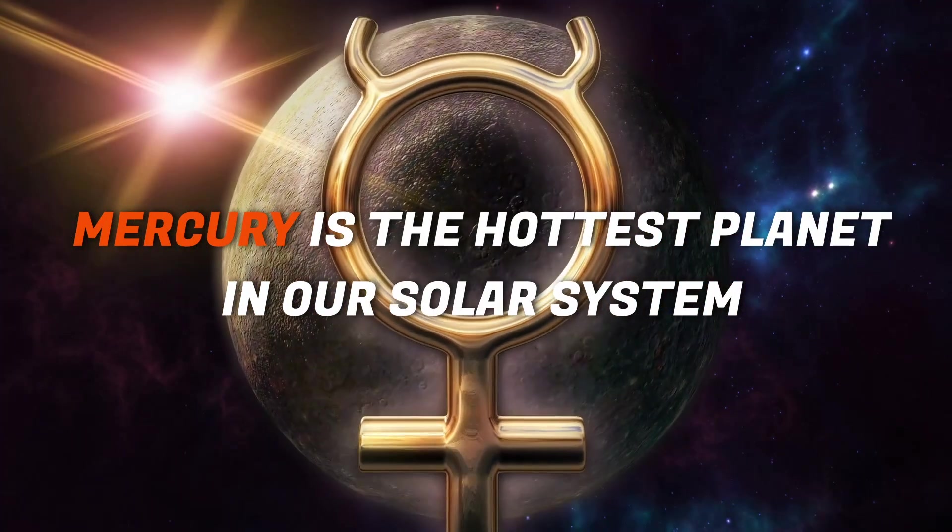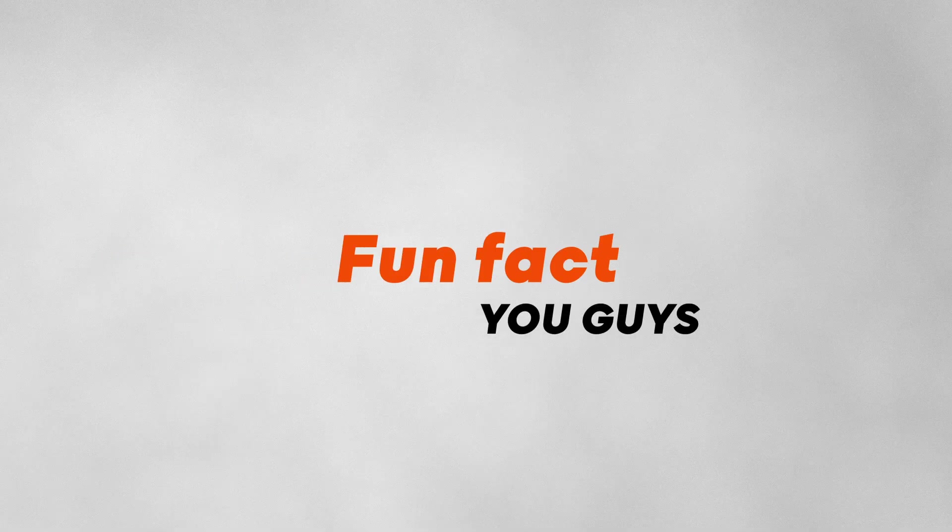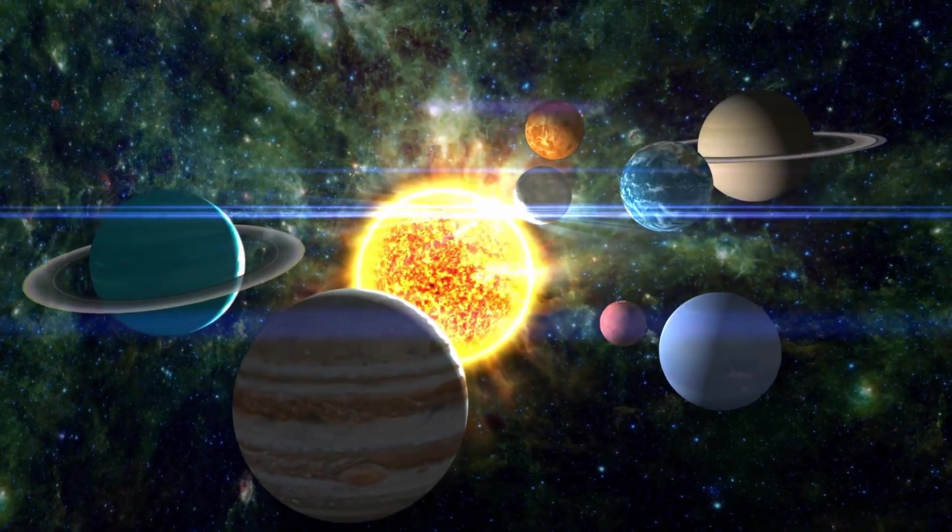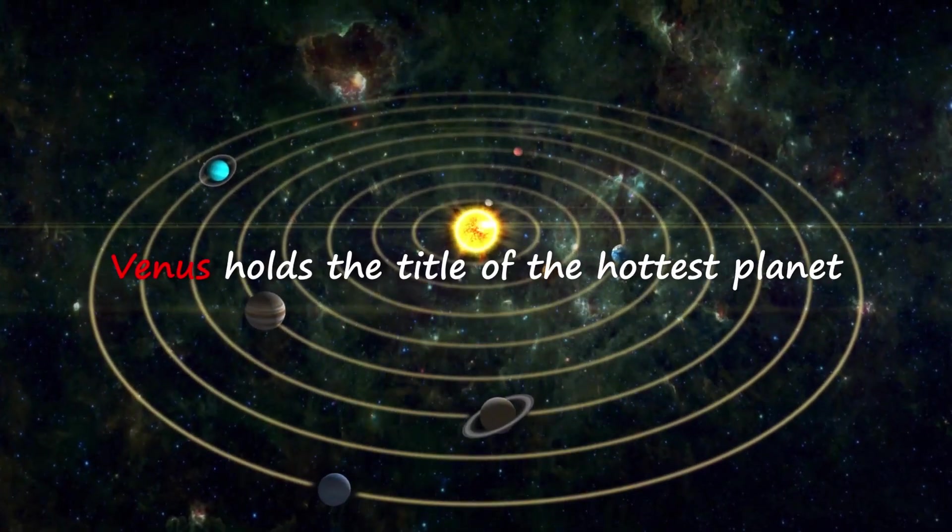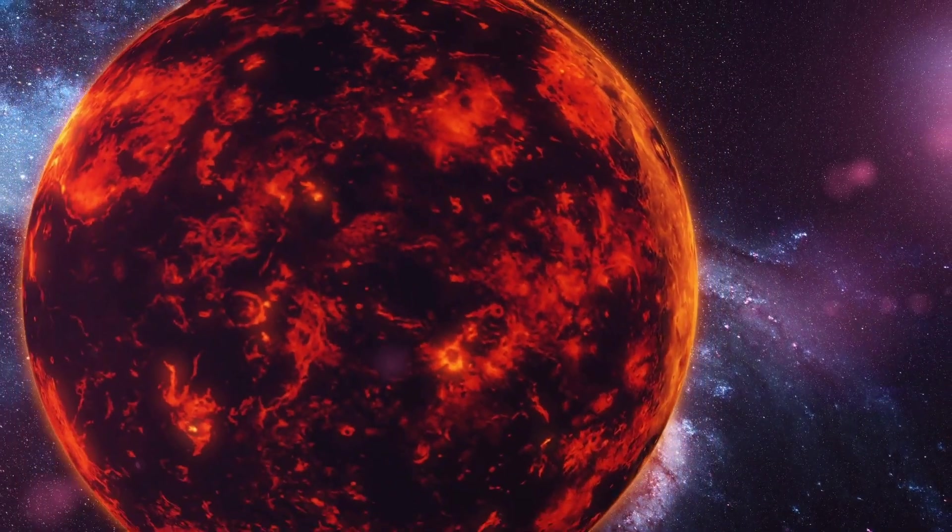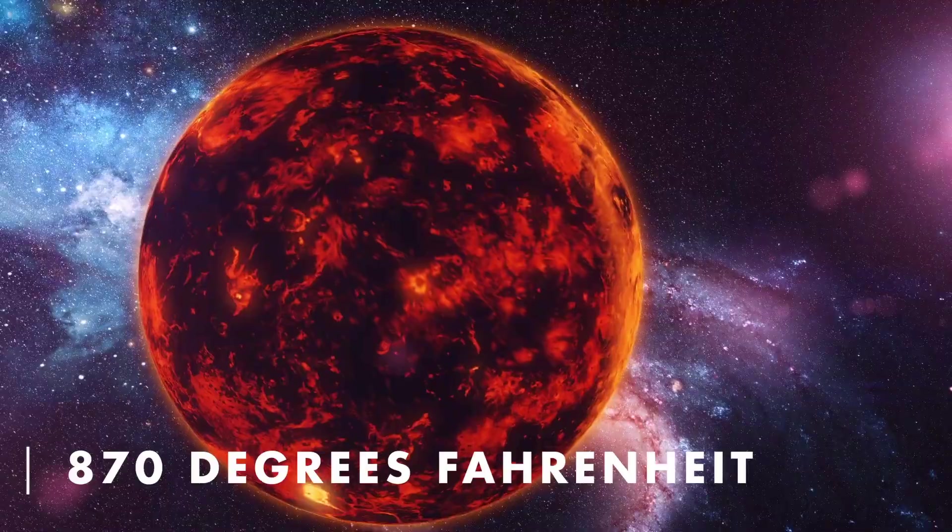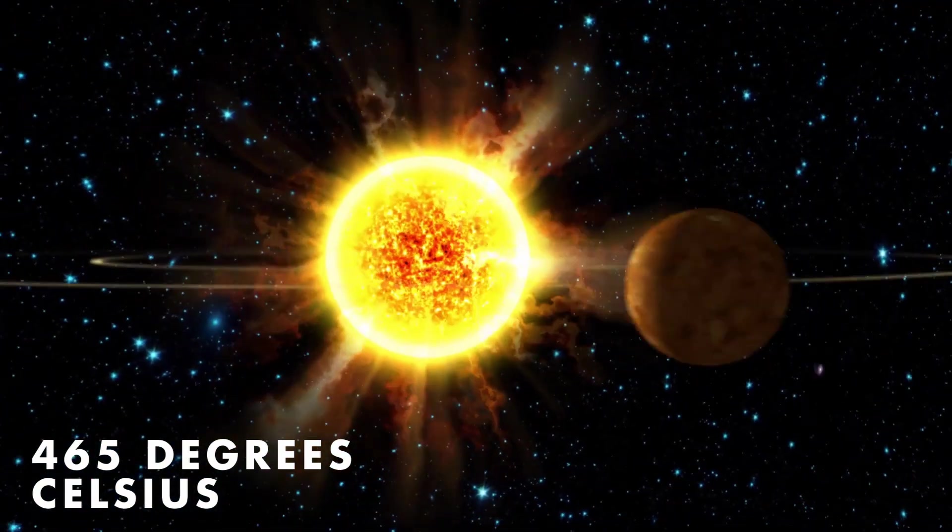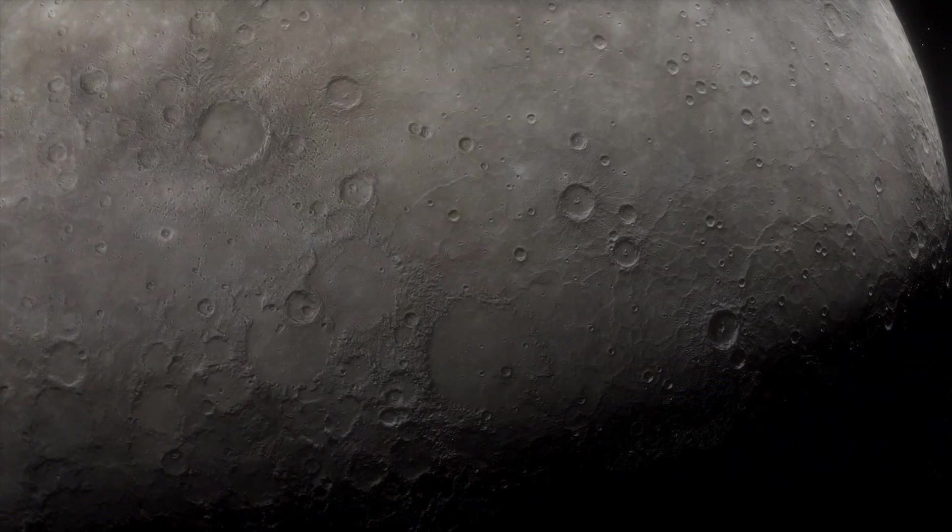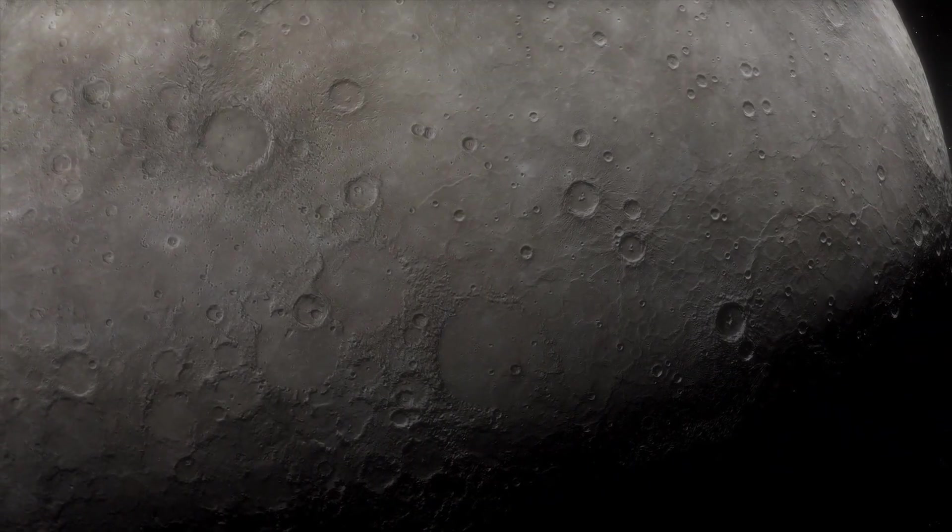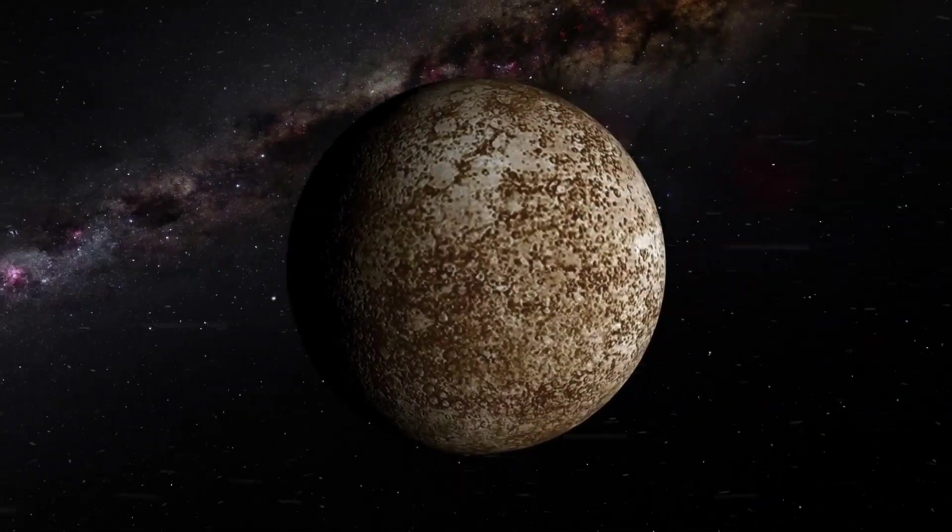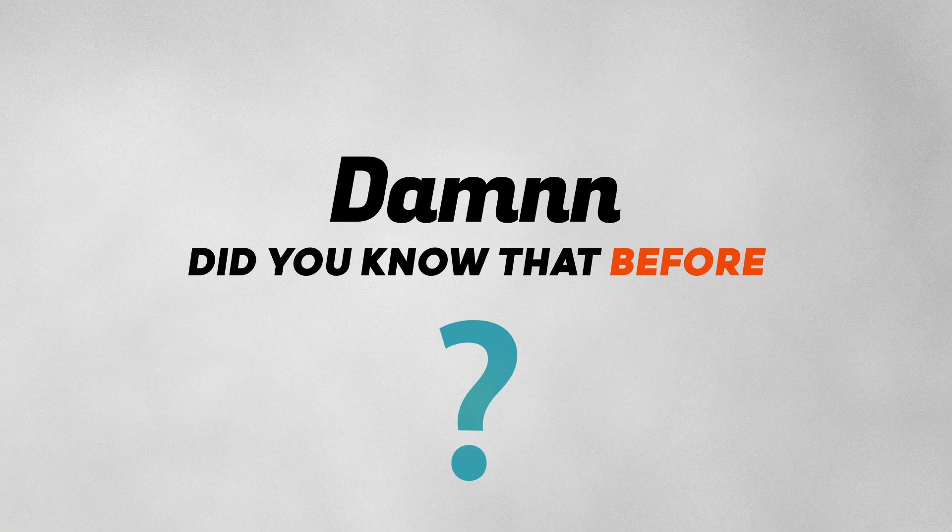Number 10. Mercury is the hottest planet in our solar system. Fun fact, you guys, while Mercury is the closest planet to the Sun, its proximity alone does not make it the hottest. In fact, Venus holds the title of the hottest planet. As a result, Venus has an average surface temperature of around 870 degrees Fahrenheit or 465 degrees Celsius, making it hotter than Mercury. Conversely, Mercury experiences extreme temperature variations due to its lack of atmosphere, with scorching temperatures during the day and freezing temperatures at night. Damn, did you know that before?